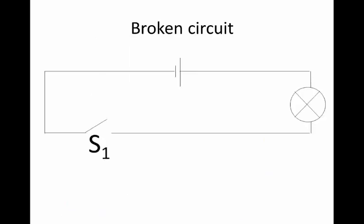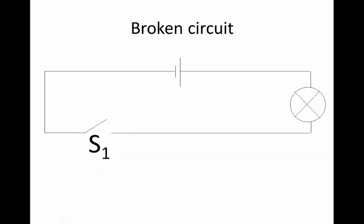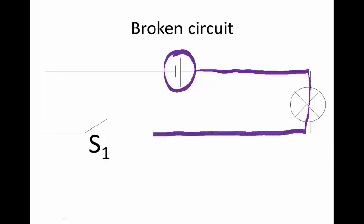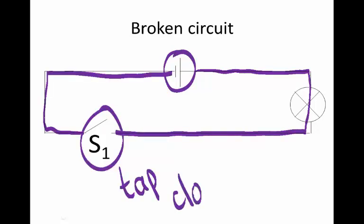Here's another example of a broken circuit. We have a switch which is open, so current will not flow anywhere. We can think of this like a water circuit, where we have a pump, we have pipes, water inside the pipes — but here we have a tap, and the tap is closed.